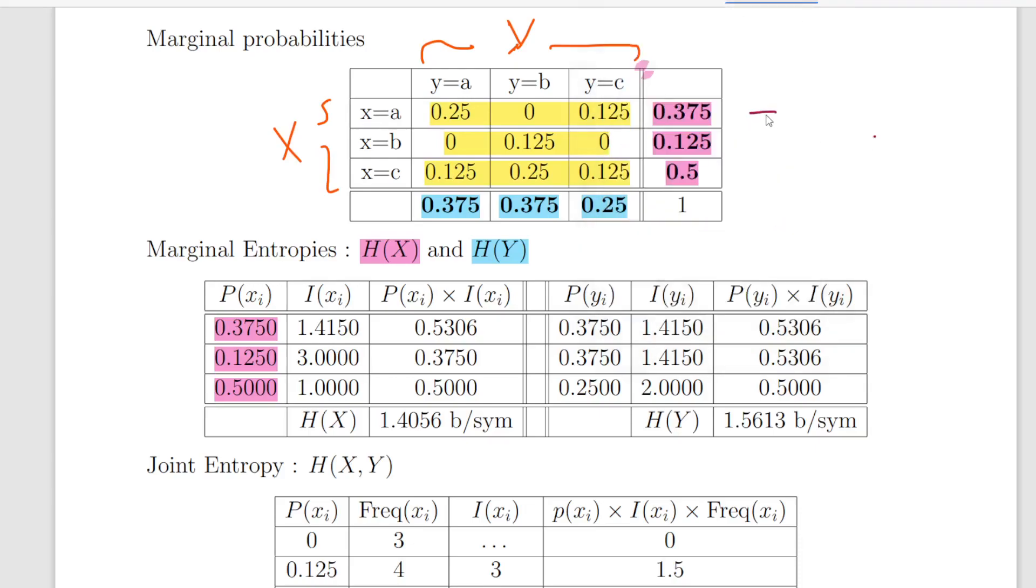So the information is simply minus log to the base 2 of P. So what I have here is just minus log to the base 2 of P. So minus log to the base 2 of 0.375, that should be 1.4150.